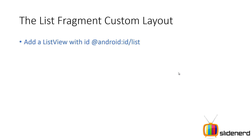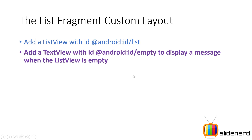To create a custom layout you need a separate XML file that has a ListView, but you need to ensure that this ListView has the ID android:id/list. This is important because the fragment is going to try and find a ListView with this ID, and if it doesn't find it your app is going to crash.